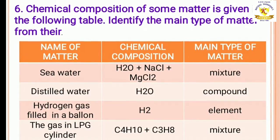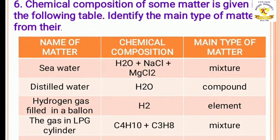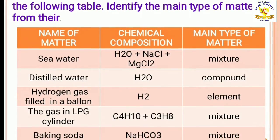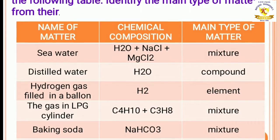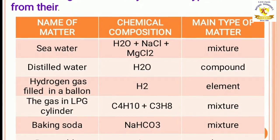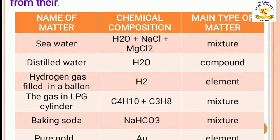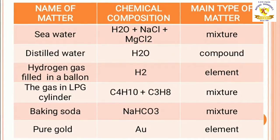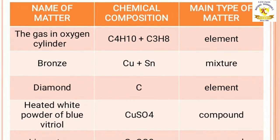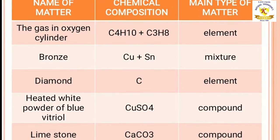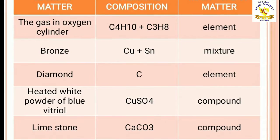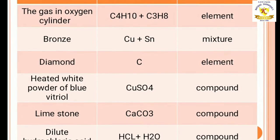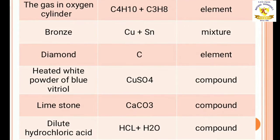Question number 6: chemical composition of some matter is given in the following table. Identify the main type of matter from there. The table has three columns: name of matter, chemical composition, and main type of matter. For example, seawater — H2O, NaCl, MgCl2 — is a mixture. The gas in oxygen cylinder: C4H10 plus C3H8 — it is an element. You also need to write for bronze, diamond, heated white powder of blue vitriol, limestone, and dilute hydrochloric acid.